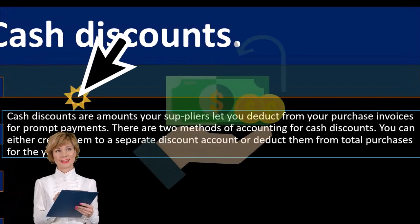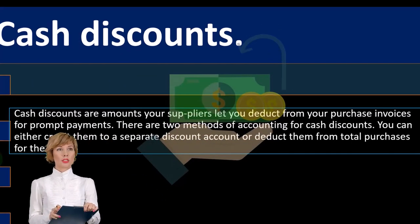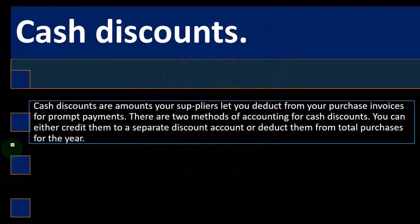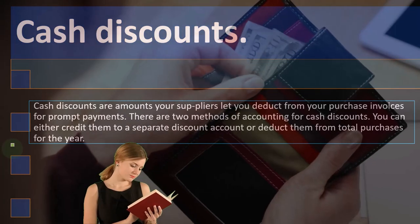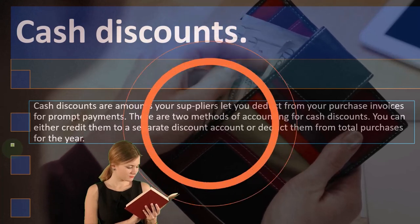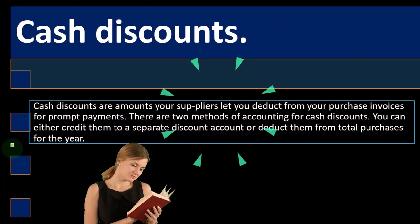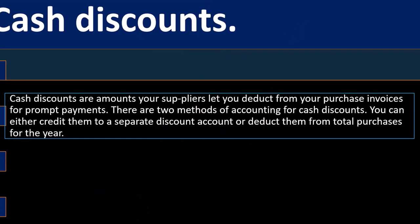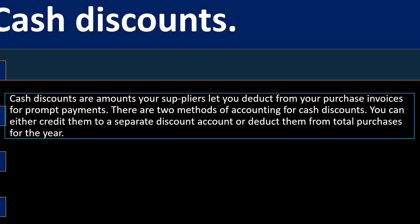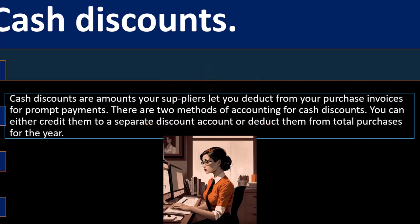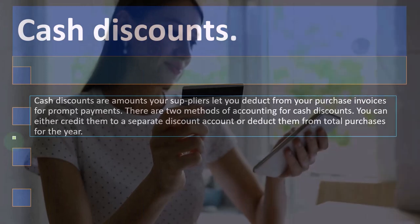Cash discounts are amounts your suppliers let you deduct from your purchase invoices for prompt payment. These are typically small discounts meant to incentivize earlier payment. The general concept from the payable side is to pay as late as possible without penalty; from the recipient side, they want their money as soon as possible, so they offer a small discount to incentivize early payment. There are two methods of accounting for cash discounts: you can either credit them to a separate discount account or deduct them from total purchases for the year.